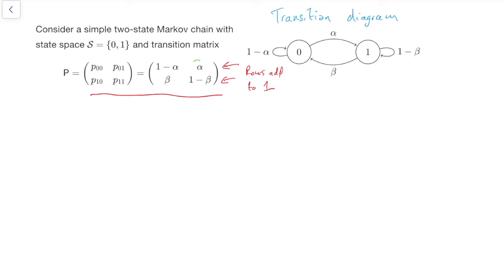For example, if we look at this alpha in the top left of the transition matrix, that's P01, which is the probability of going from 0 to 1. And here's the arrow from 0 to 1, and there's the alpha labeling it. So that transition matrix tells us what the transition diagram should look like, and vice versa.